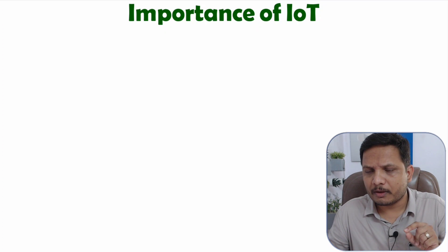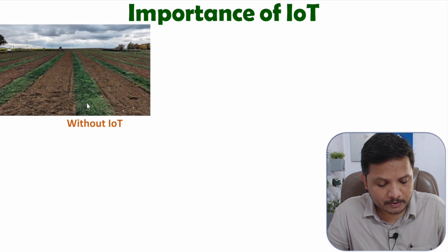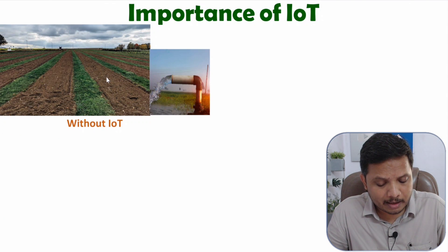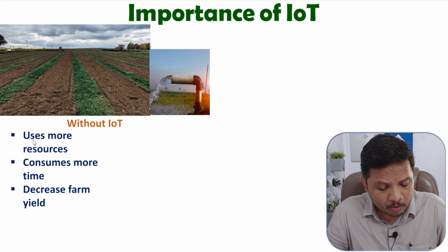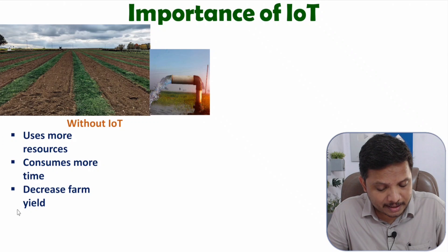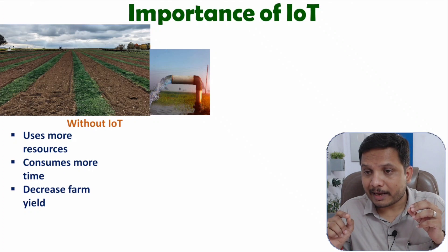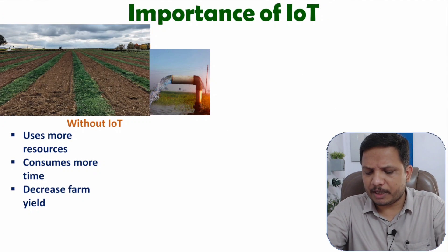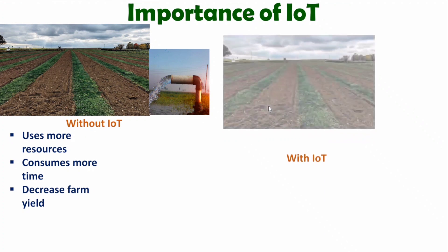Now I'll explain the importance of IoT by comparing two scenarios. Without IoT, consider one farm with so many resources. Without IoT, control will be manual — this requires more resources, consumes more time, and results in a decrease in farm yield. To optimize resources we can use IoT, Internet of Things. Let me show you a scenario with the same farm using IoT.